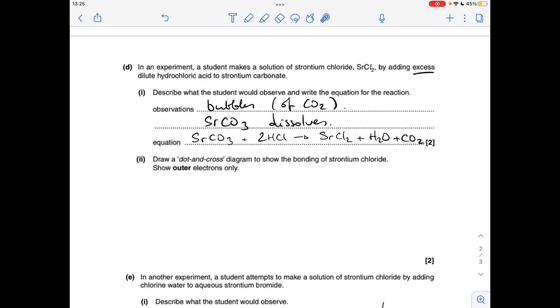Part D now, so the students added excess hydrochloric acid to strontium carbonate. You would see bubbles, CO2 bubbles. And because the acid's in excess, the strontium carbonate would dissolve. Both of those would be needed there. And the equation looks like that.